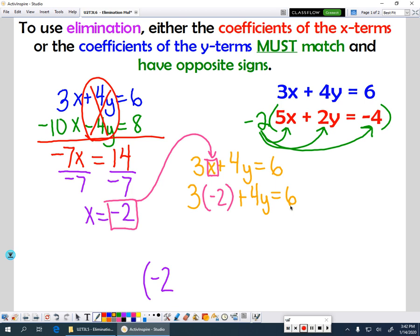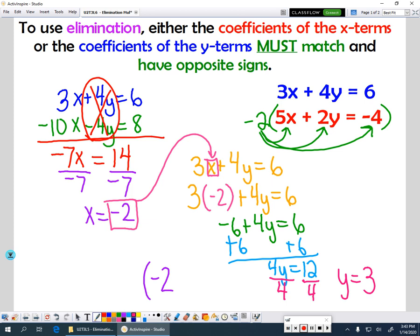And then it's just time for us to solve it. So 3 times negative 2 gives me negative 6 plus 4y equals 6. And I have to move all of my numbers together. So I'm going to add this 6 to both sides. And I'll get 4y = 12. And then I'm going to finish it off, divide both sides by 4, and I find out that y = 3. So when I look at this ordered pair, my solution is negative 2 comma 3.